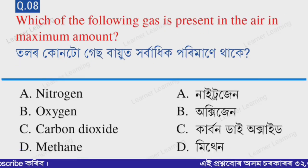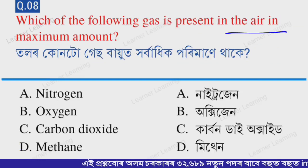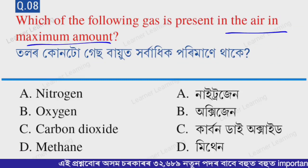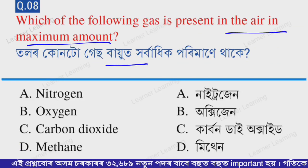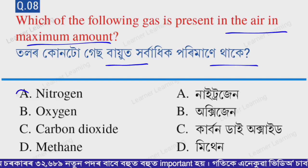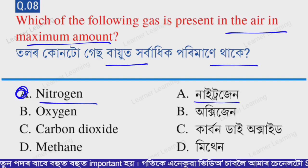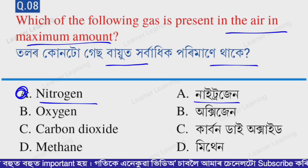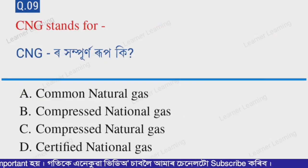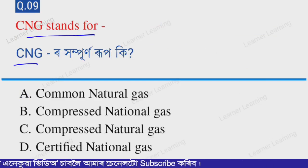Next question: Which of the following gas is present in the air in maximum amount? The correct option is option A — nitrogen. Nitrogen is present in maximum amount in the atmosphere. Next question: CNG stands for — the correct option is option C — Compressed Natural Gas.